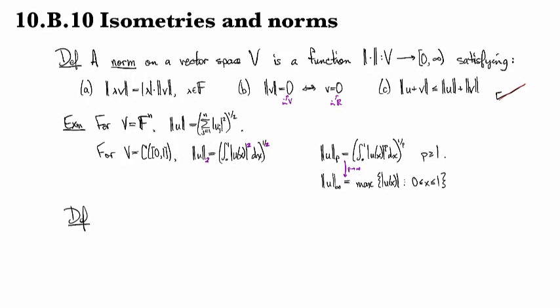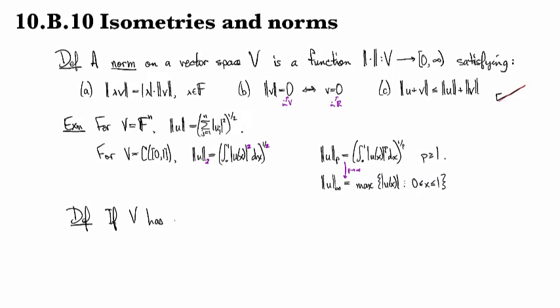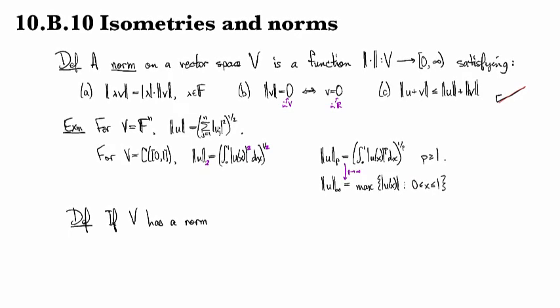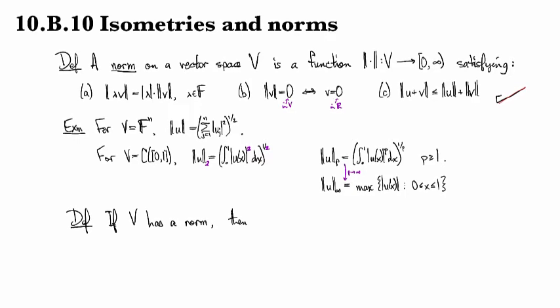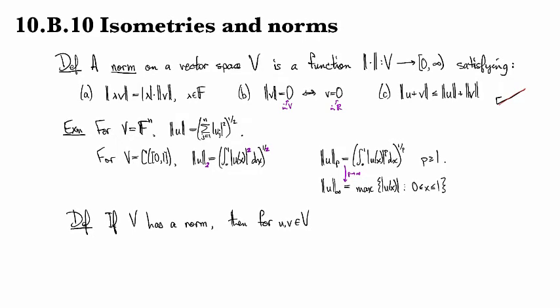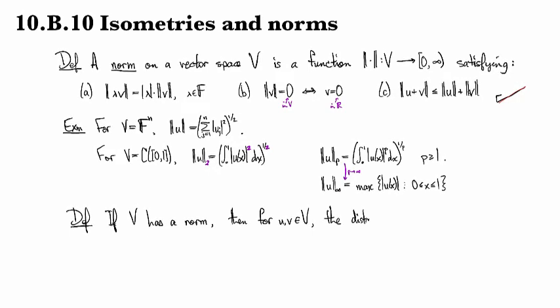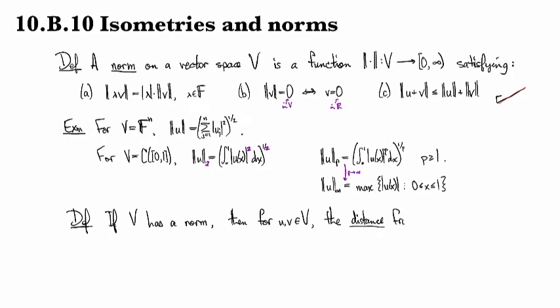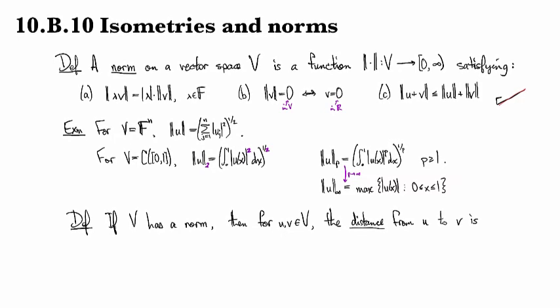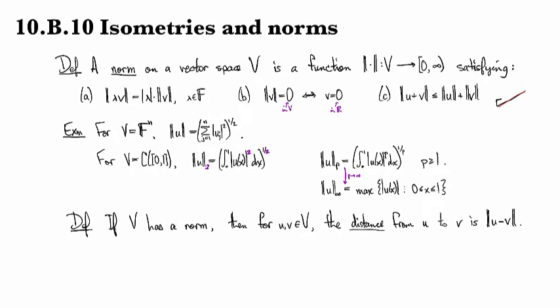If V has a norm, in other words if we've defined a norm for it, then for u and v we have a well-defined notion of the distance from u to v. The distance is just the length of the difference, so the size of the gap between the two is the distance from one to the other.